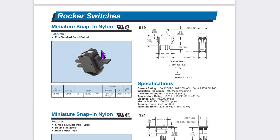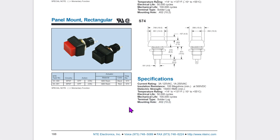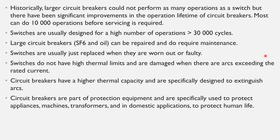For example, this miniature snap-in nylon switch can perform about 100,000 cycles. But not all switches offer a very long lifespan — for example, this one only has 10,000 mechanical cycles and 6,000 electrical cycles. Having said that, generally switches are designed to operate more times than circuit breakers.